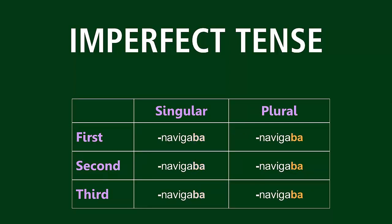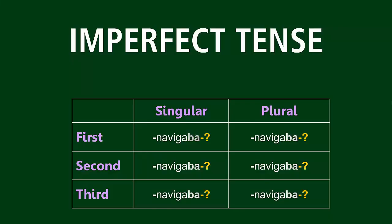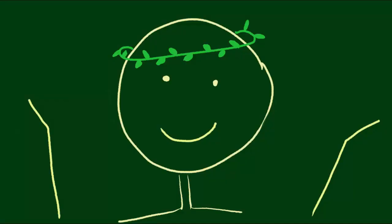B-B-B-B, B-B-B. That's right, just B-B-B, B-B-B. Then you add the personal endings — the good old O-S-T, M-U-S-T-E-S-E-N-T-E. Fantastic.